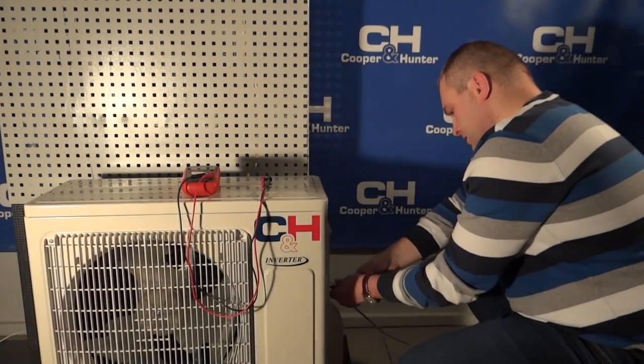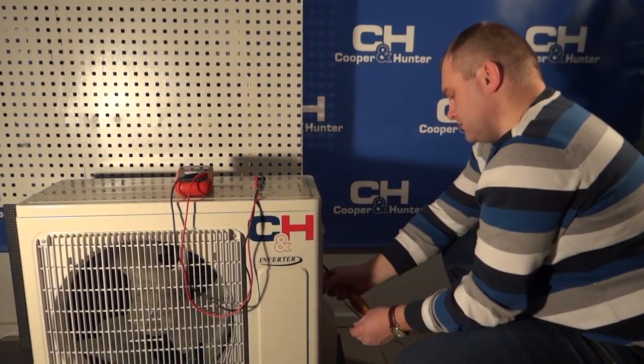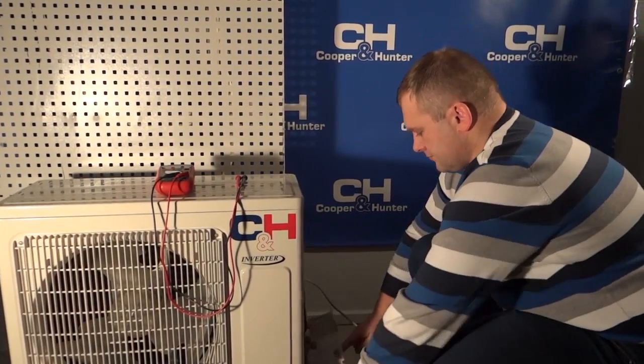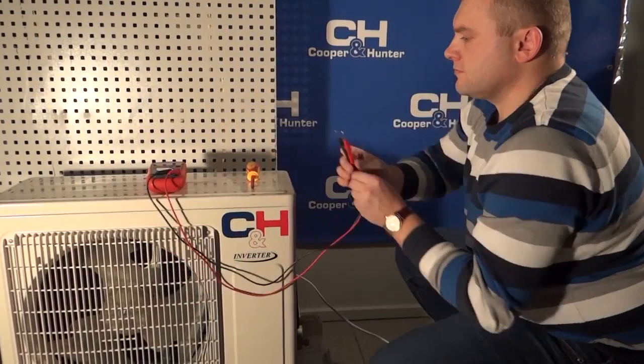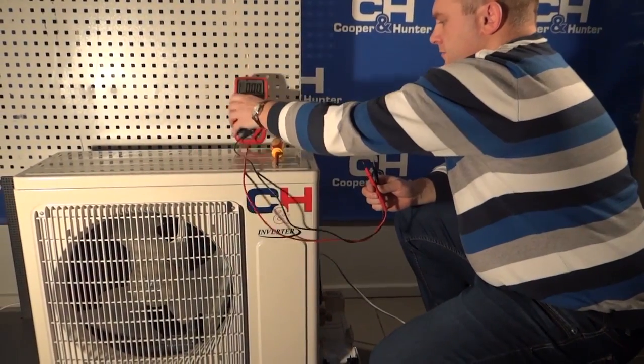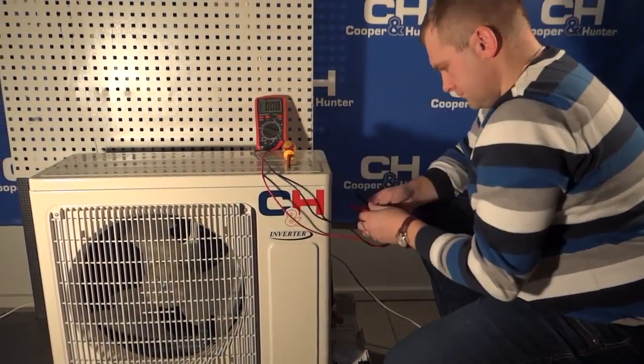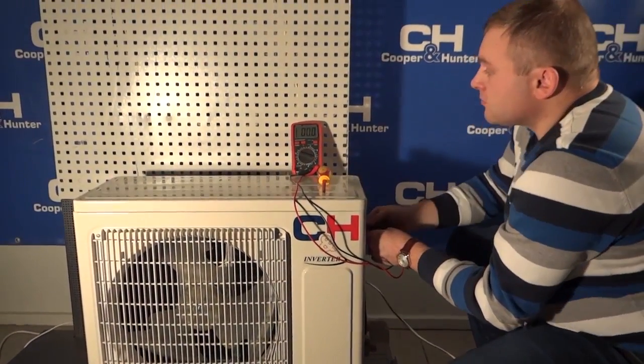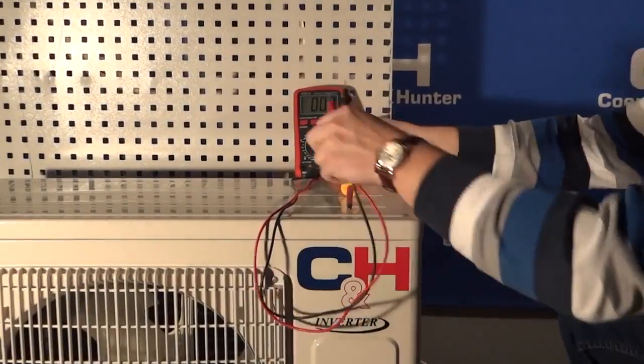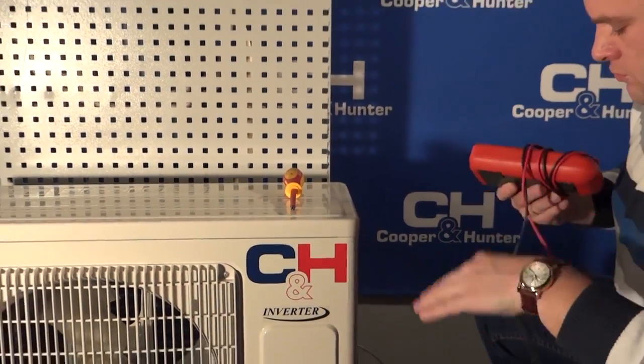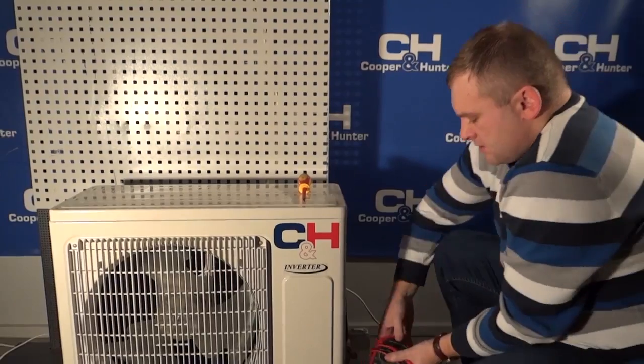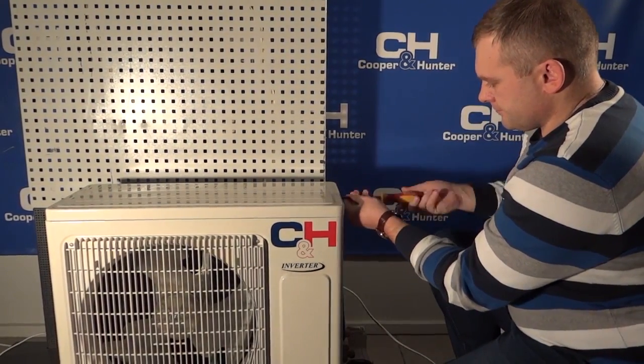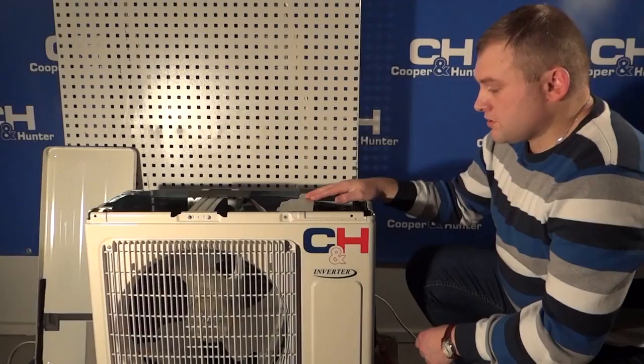We check whether there is power to the unit on the first and third terminals. Zero, no power. We remove the cover of the outdoor unit to access the main board of the outdoor unit.